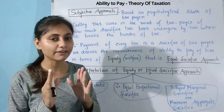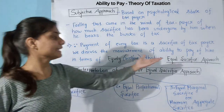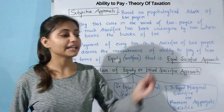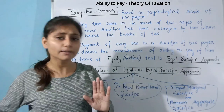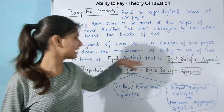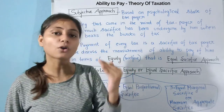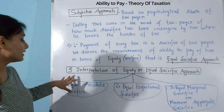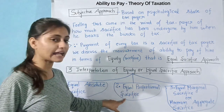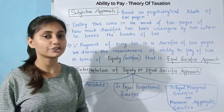The equal sacrifice approach means every person makes roughly equal sacrifice. One particular person should not sacrifice a lot while another sacrifices little. We can also call this the equity approach. There are three interpretations of this approach: equal absolute sacrifice, equal proportional sacrifice, and equal marginal sacrifice or minimum aggregate sacrifice.